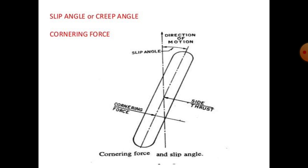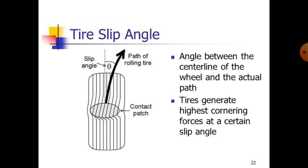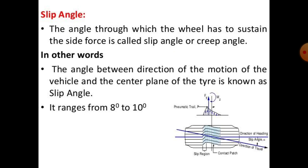Slip angle, also called grip angle, relates to cornering force. The tire slip angle is the angle between the centre line of the wheel and the actual path of travel. Tires generate the highest cornering force at a certain slip angle. The angle through which the wheel has to sustain side force is called the slip angle, and its range is 8 to 10 degrees.